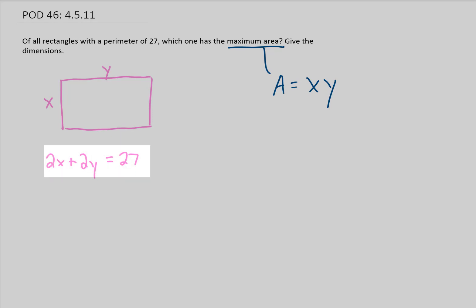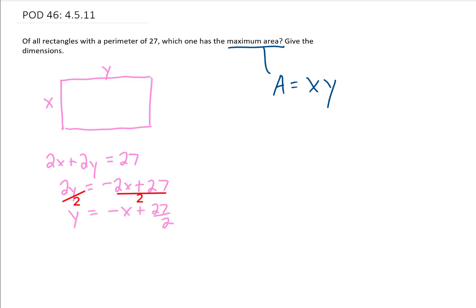The way that I'm going to do that is I'm going to solve this perimeter equation for y. I'm going to subtract 2x from both sides, and then I'm going to divide everything by 2. I'll just leave 27 halves as it is. And then what I'm going to do is take this y, which is now negative x plus 27 halves, and plug it in to this equation for y right here.